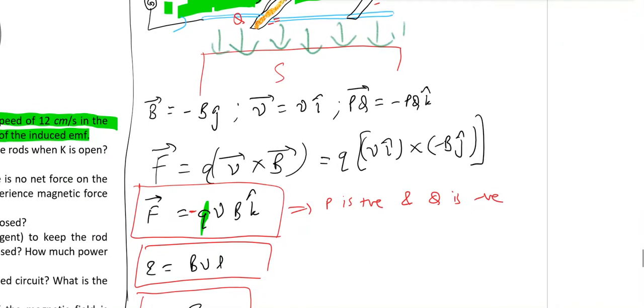So here is the answer. When K is open, charges do experience force. This much force charges experience. And then P becomes positive, Q becomes negative.